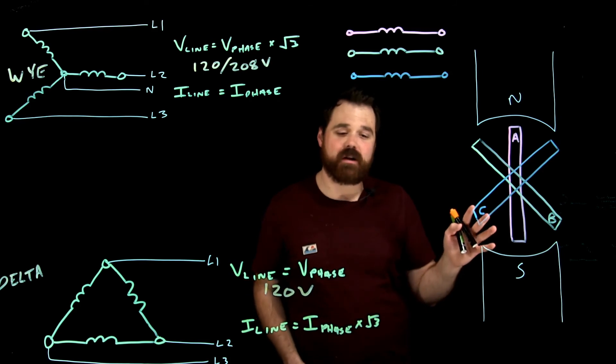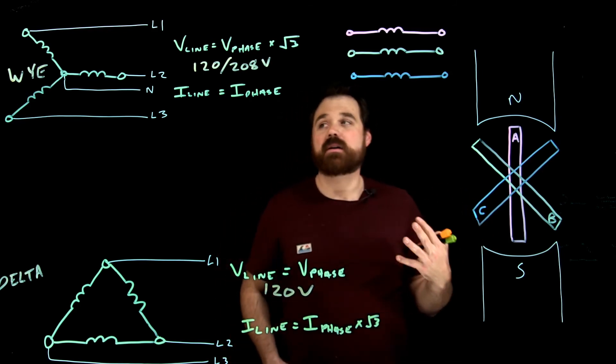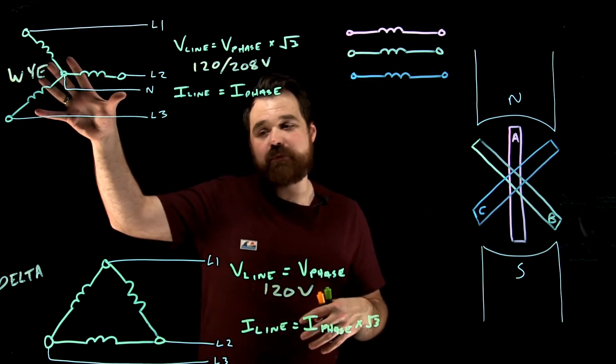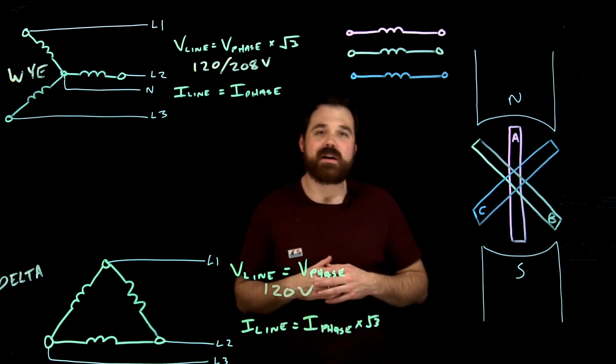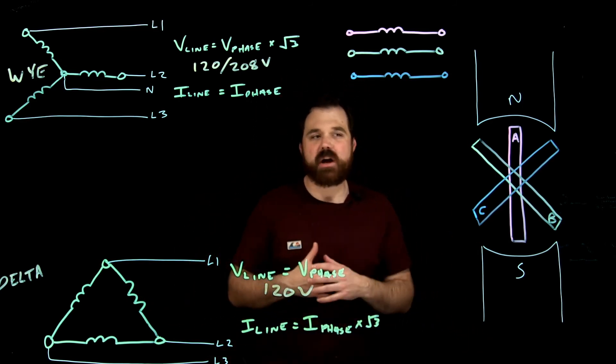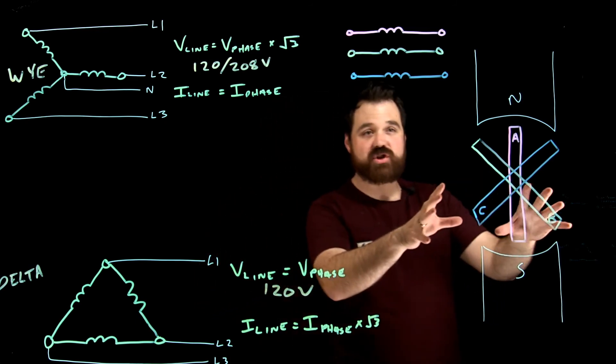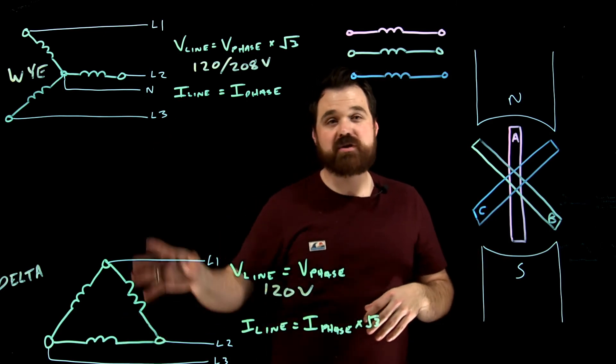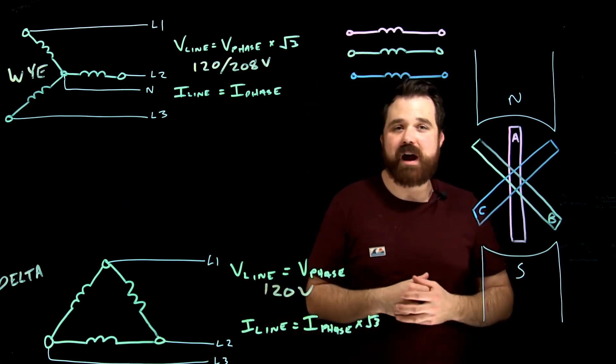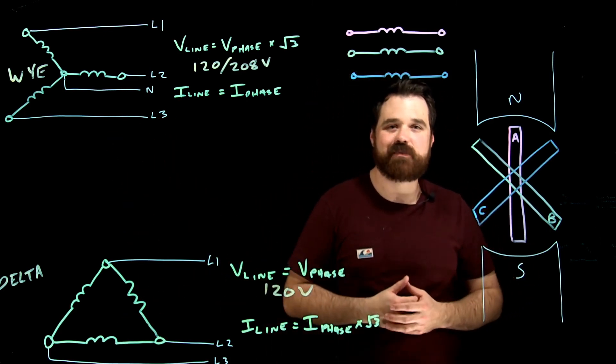So depending on your application from your generator is really going to determine whether you're going to connect it up in a Y formation or in a delta formation. So that's just kind of covering how I go from a three-phase generator, how I take those three windings, and I can connect them up in one of two ways, and kind of how those two different ways look in their relationship between them.